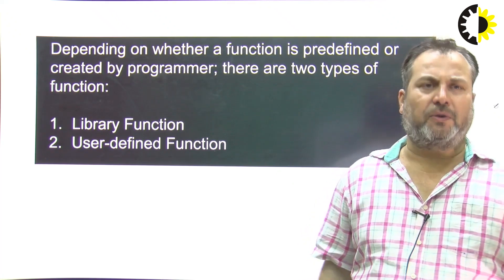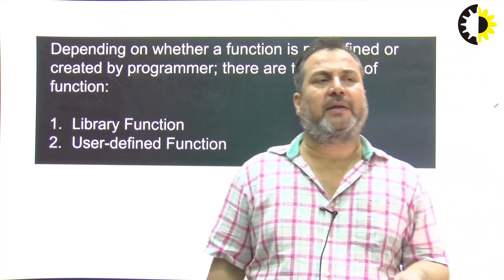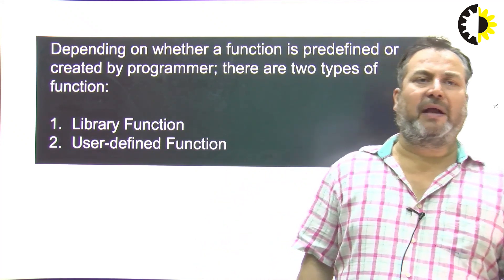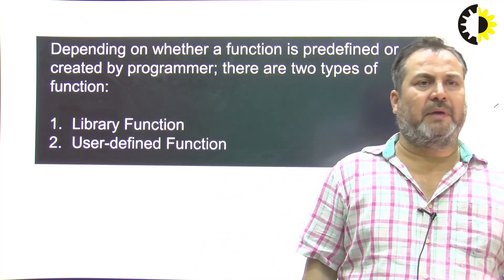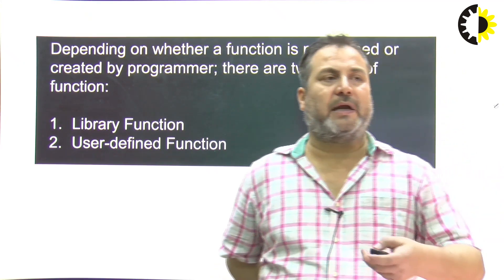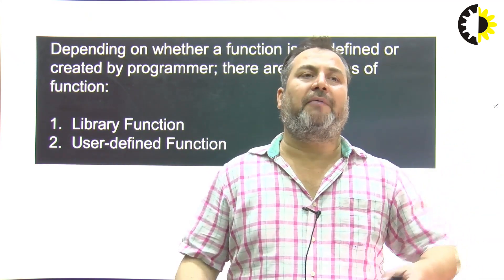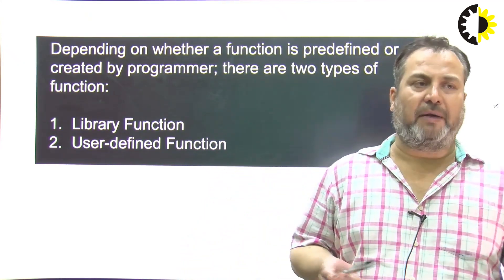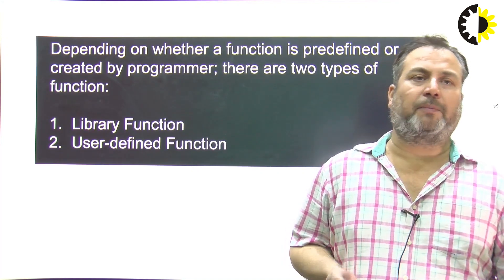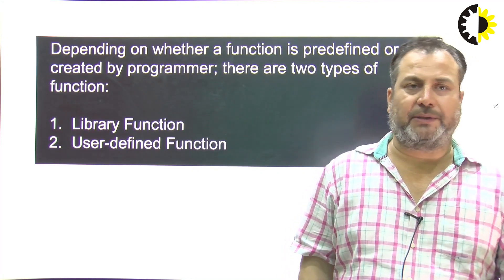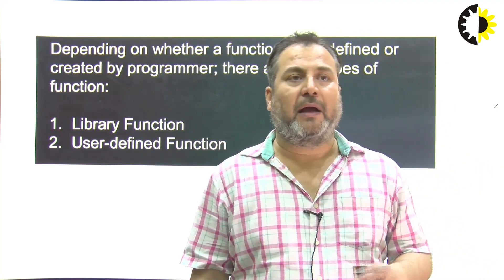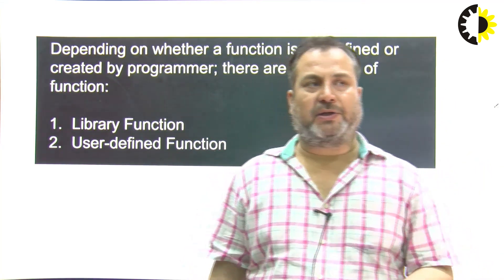Library functions are those functions which are already defined. They are defined in some kind of header file, like stdio.h, conio.h, and so on. User-defined functions means we make our own functions. You would have to write the prototype declaration, write the definition, and call those functions.